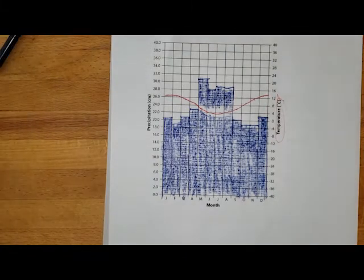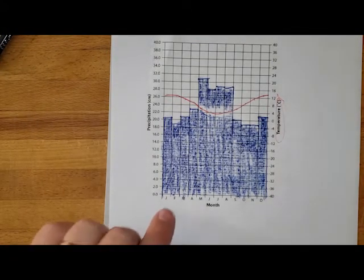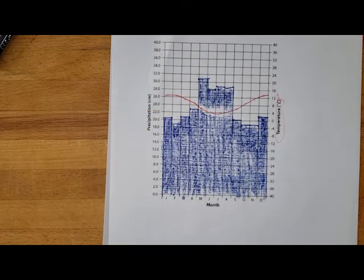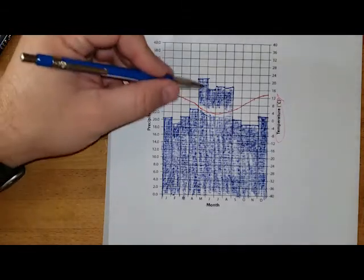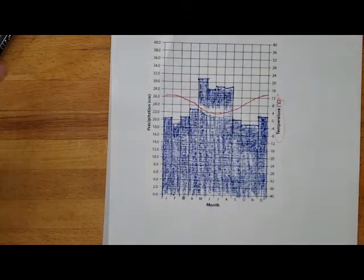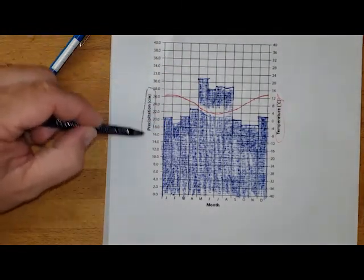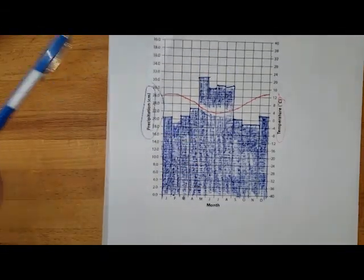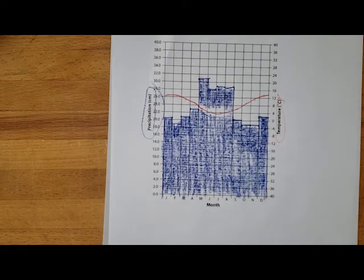And so there we go. We've got our climate graph created for Puerto Aysen Chile. For each month I have my temperature and I've got my amount of precipitation there. Sometimes they will overlap with each other and that's okay. We get that one figured out. But precipitation is going to be in blue and temperature is going to be in red. Data for each month looking across.